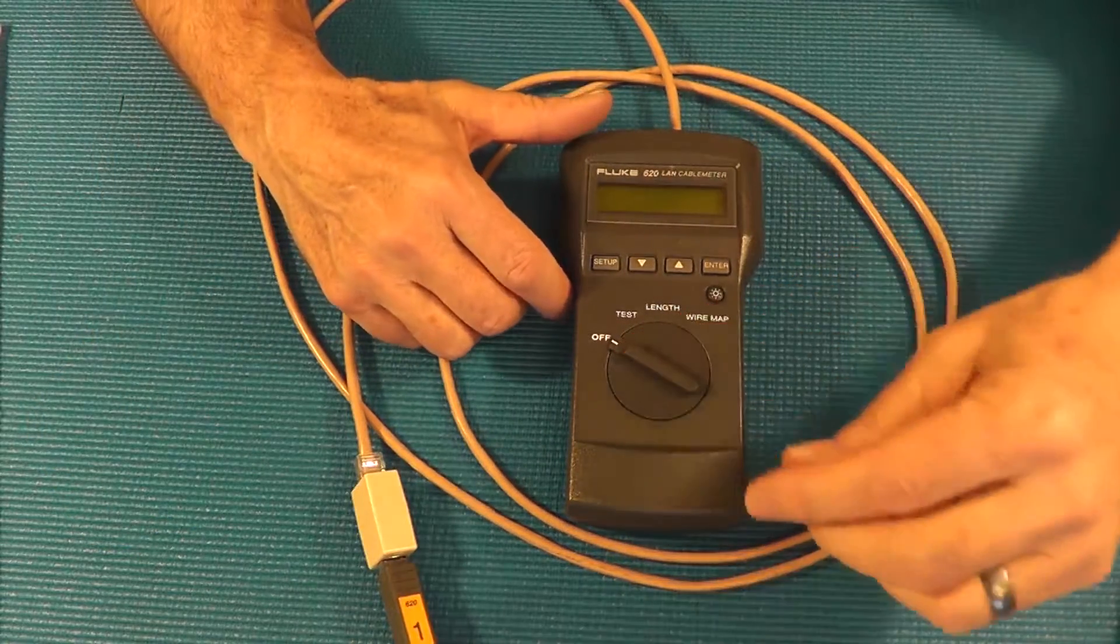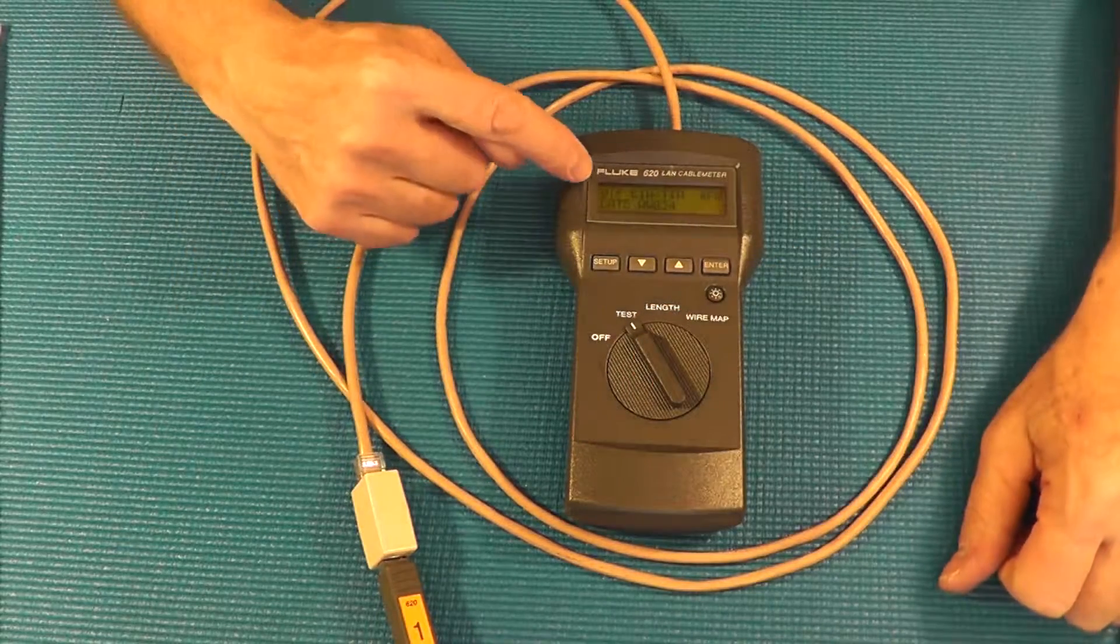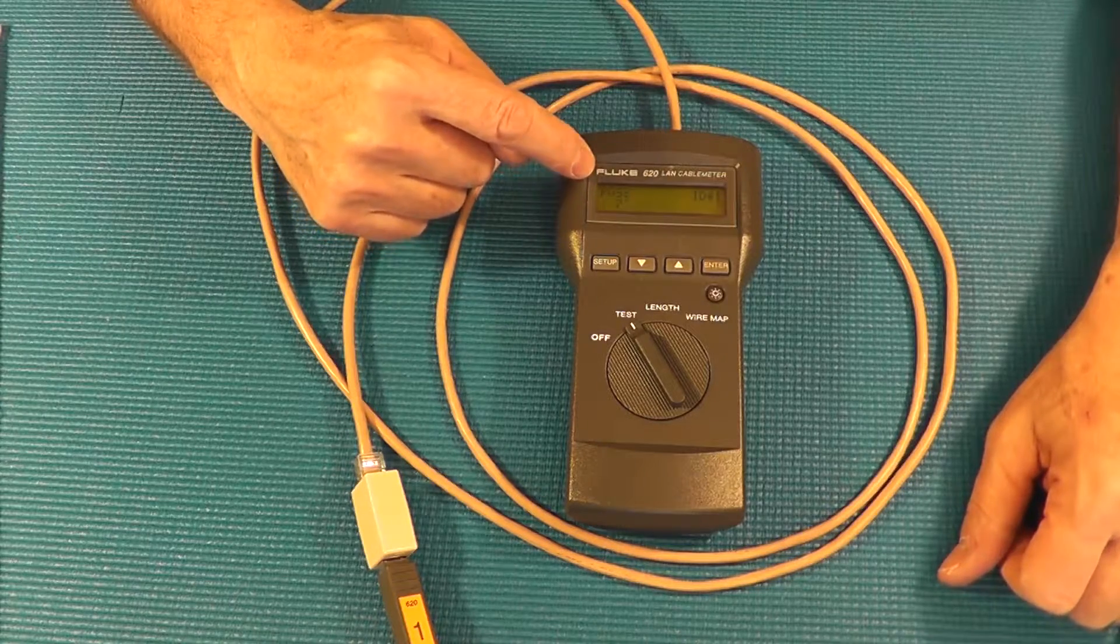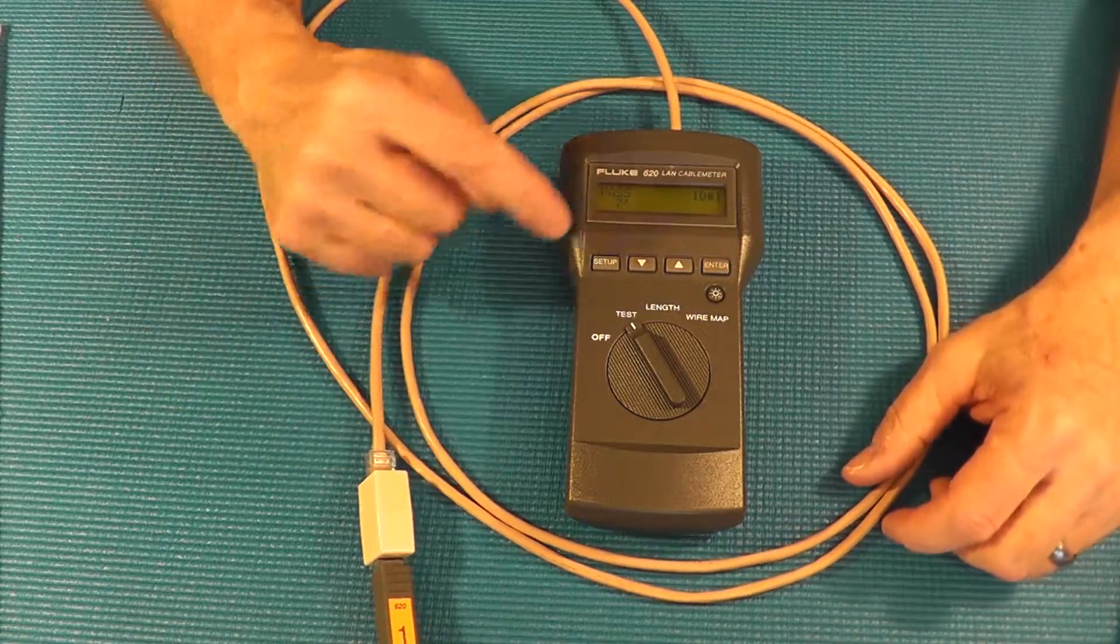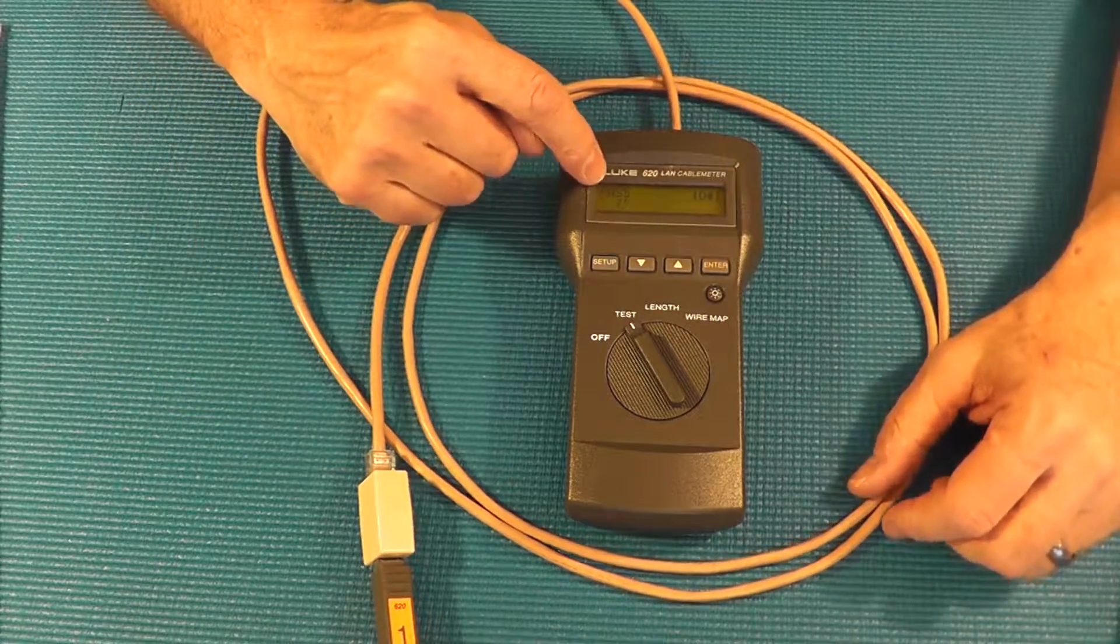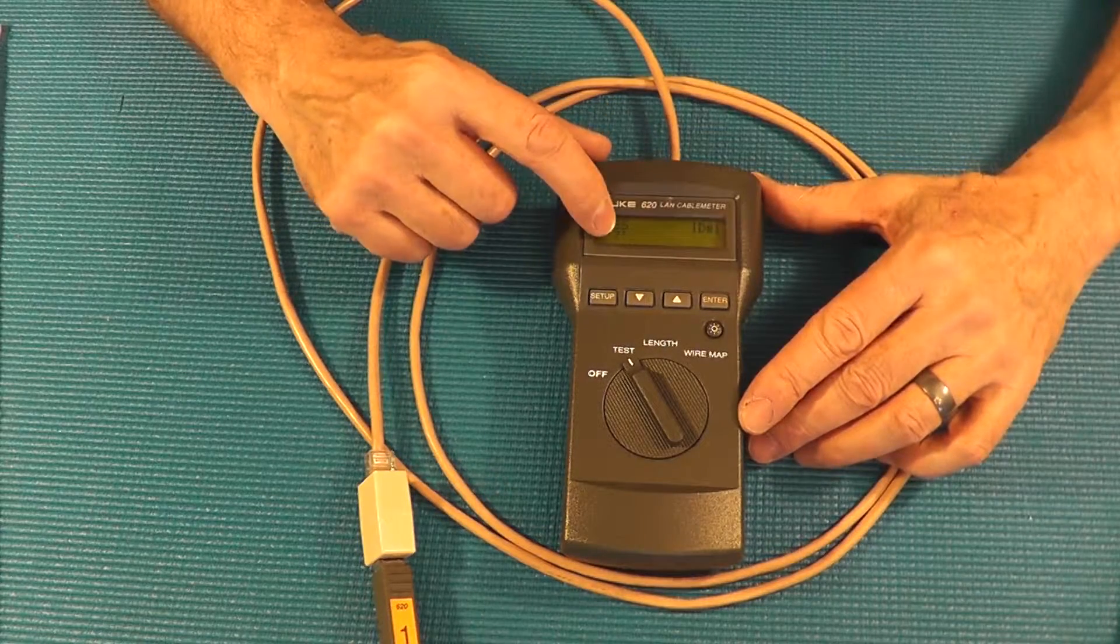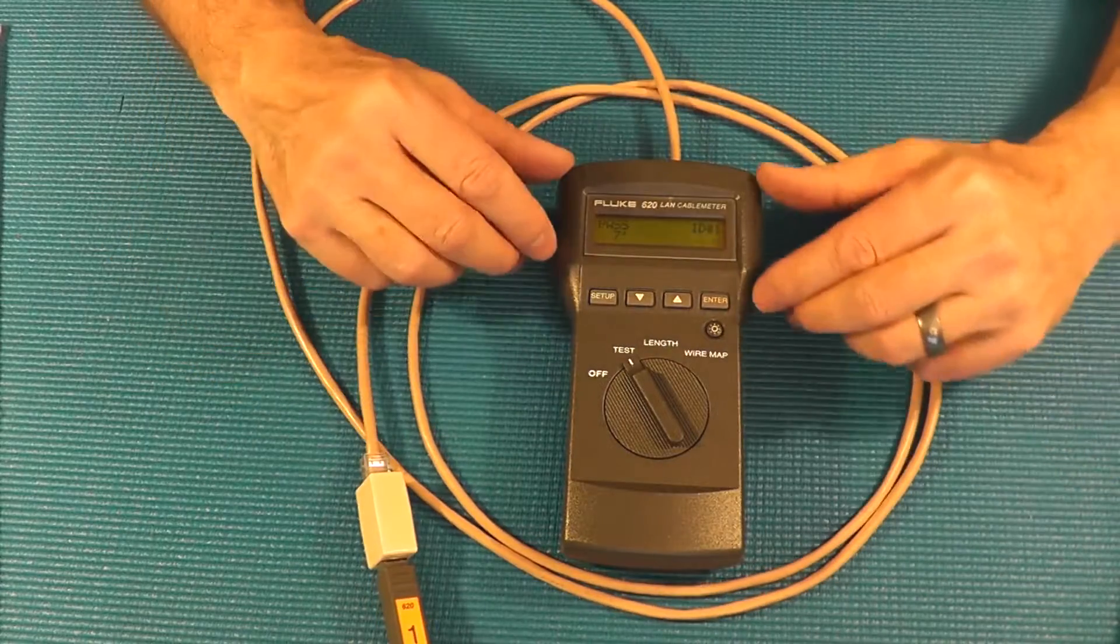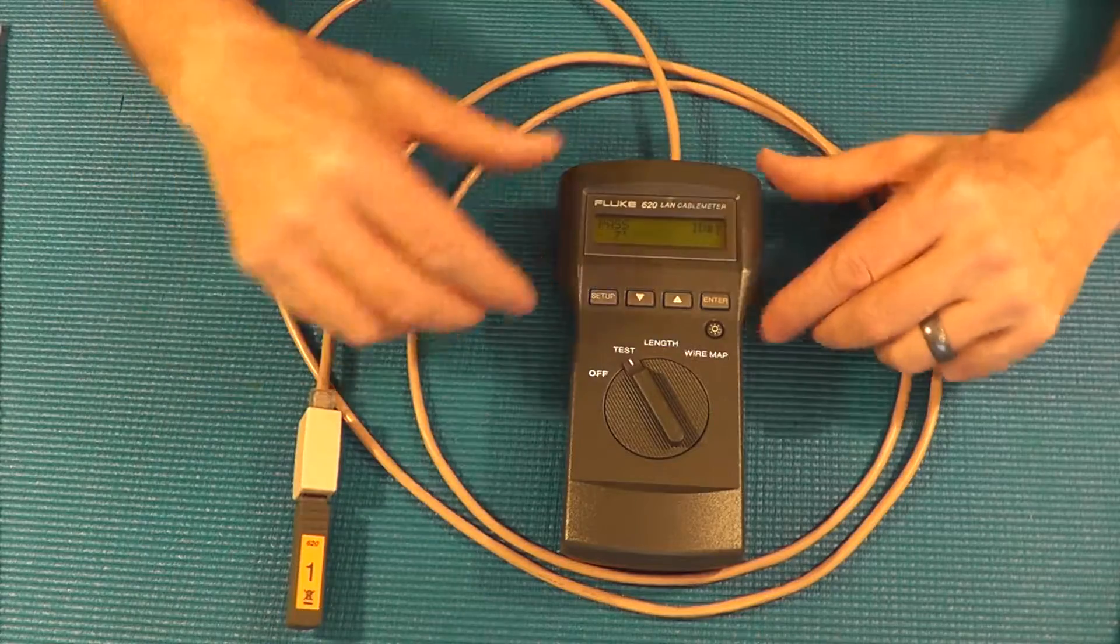Now very simple instrument to use. I put it into the test version, it tells me what it's testing here and it quickly said UTP 568 AB and it gives me an indication of the results of the test which here it says pass. It gives me seven feet, that's how long it calculates the patch cord to be and it found ID number one which is the number one unit.